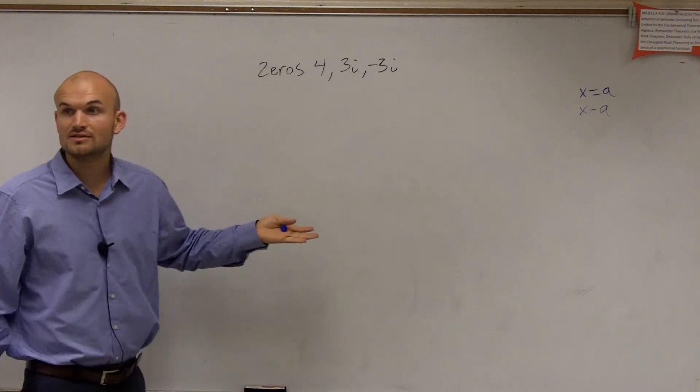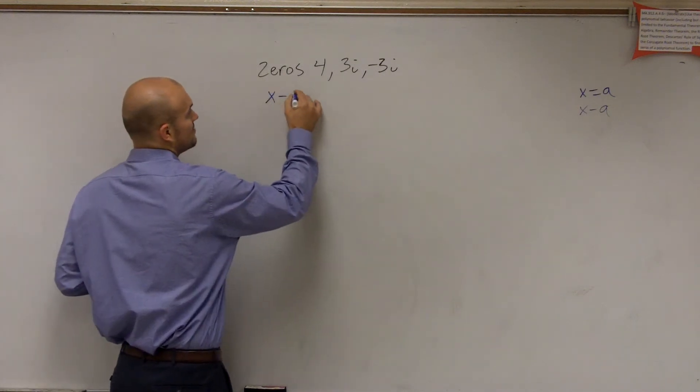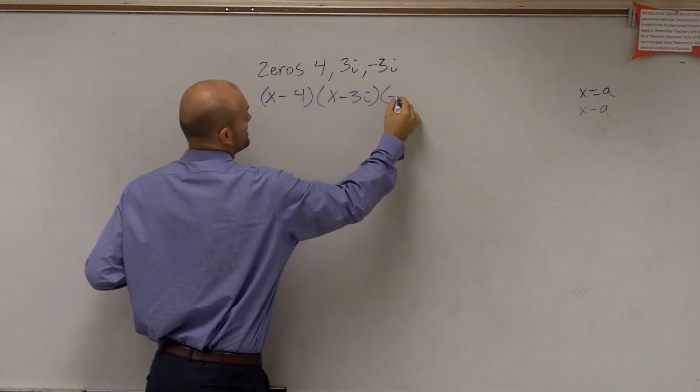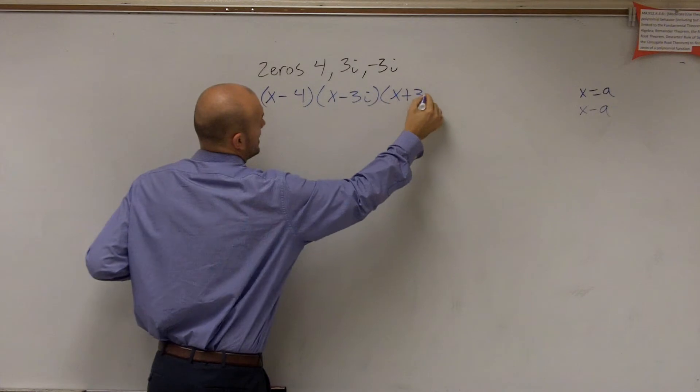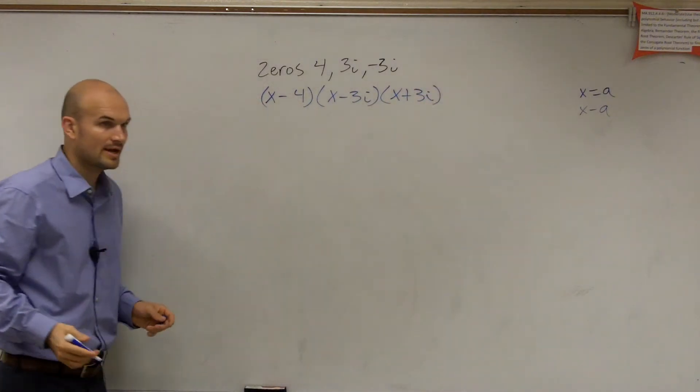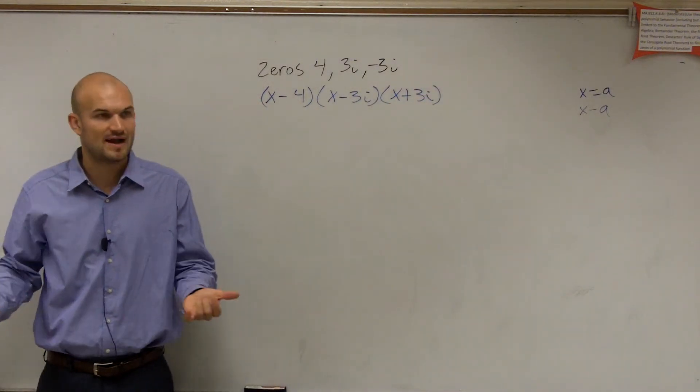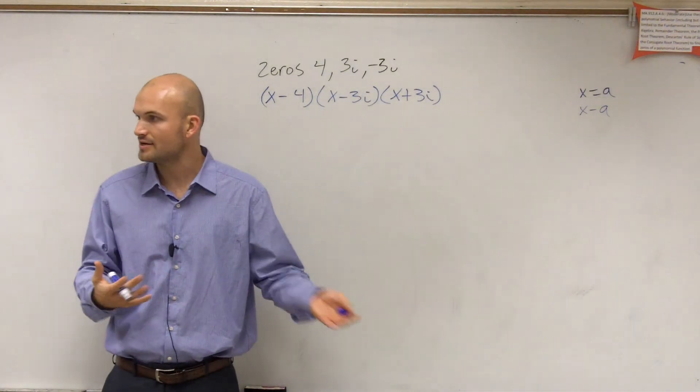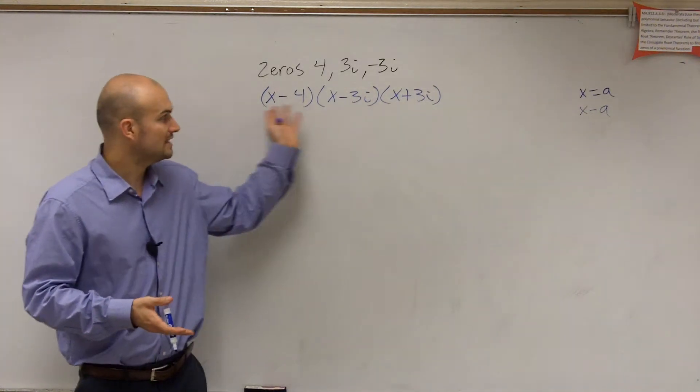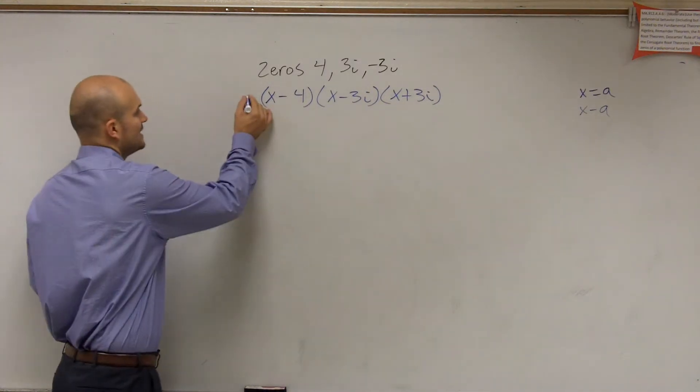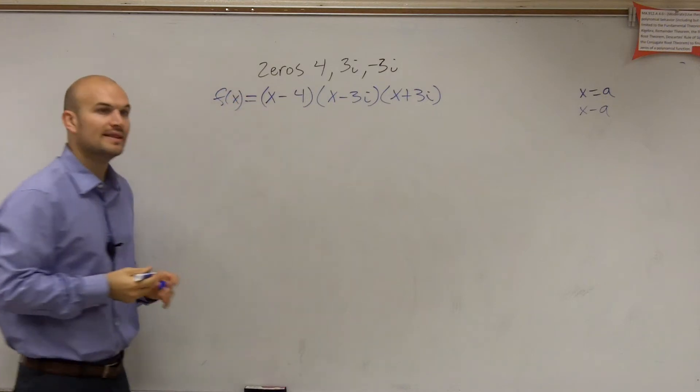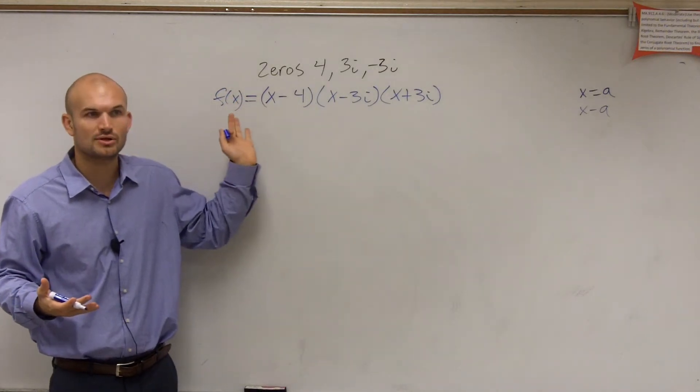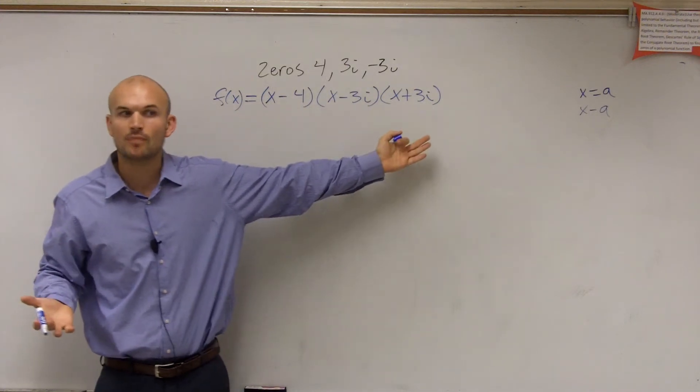So therefore, I can write these all as factors. I can write these as x minus 4 times x minus 3i and x plus 3i. And remember, factors, where does the term factors come from? Think of the factors of 6. Two factors of 6 are 2 and 3. Why are they factors? Because they multiply to give you 6. So these factors multiply to give me f of x. And that's what the question is asking. What is that polynomial? So you have it now written as factors. All you have to do is multiply.